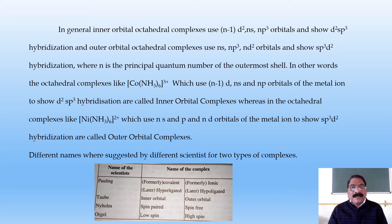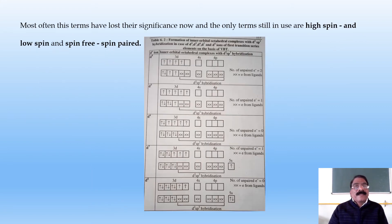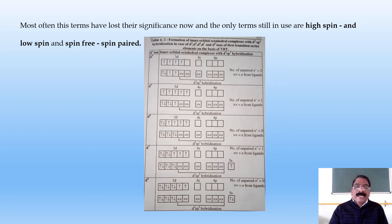Different names have been suggested by different scientists for these two types of complexes. Pauling formerly used the terms 'covalent' and 'ionic,' later replaced by 'hyperligant.' Tobe used the terms inner orbital and outer orbital. Nyholm used spin-paired and spin-free complexes. Orgel used low-spin and high-spin complexes. Most often these terms have lost their significance, and the only terms still in use are high spin and low spin, and spin-free and spin-paired.